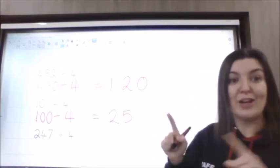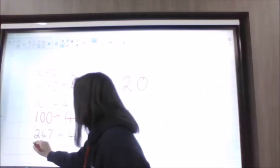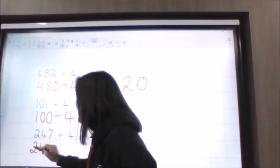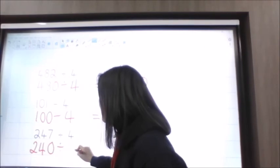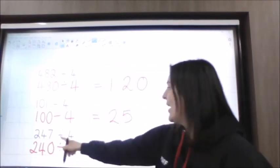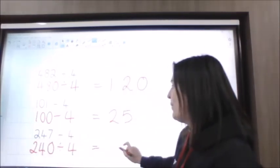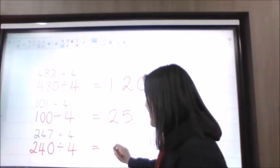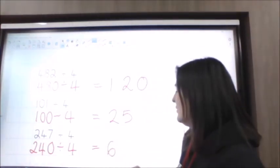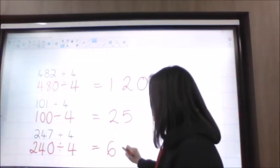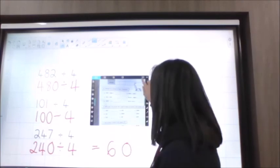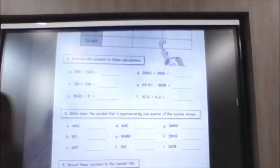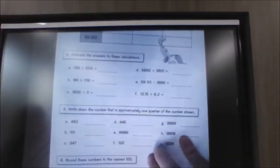I know that 24 is in the four times table, so I'm going to make 247 into 240. Then I know that 24 divided by four is six, and then I can put my zero back on to get 60. So that section — you are dividing all of those by four using that strategy.